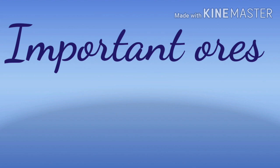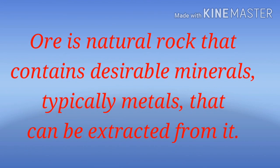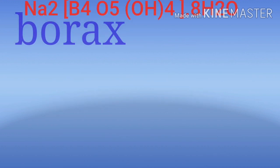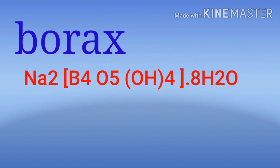The symbol of boron is B. First you should know what is the meaning of ores. Ores is naturally occurring rock that contains desirable minerals — that means the ores contain the highest percentage of that particular mineral. The first ore is borax, with formula Na2B4O5(OH)4 · 8H2O.